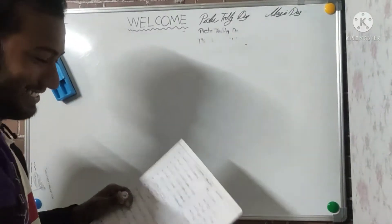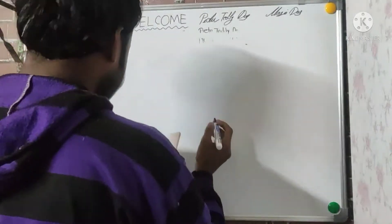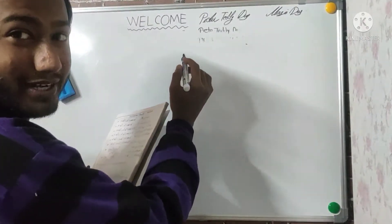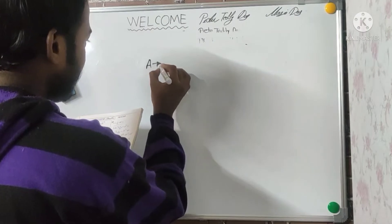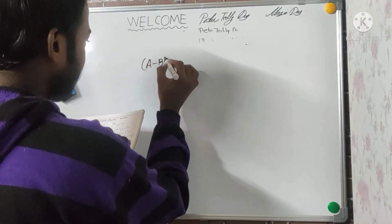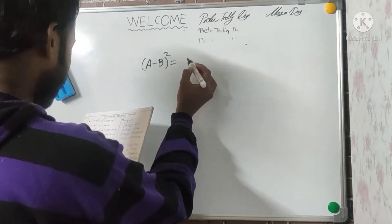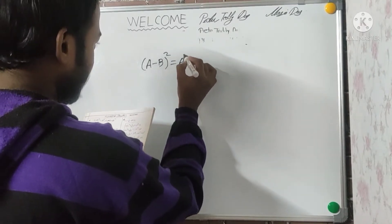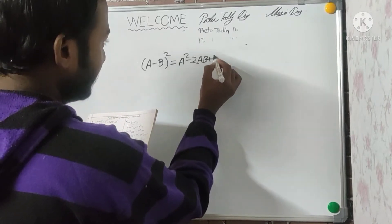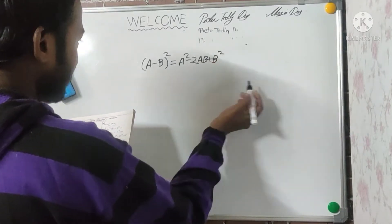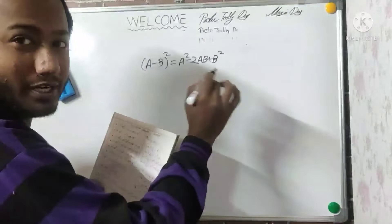What is that? I'm going to write (a - b)². Look at this: (a - b)² equals a² minus 2ab plus b². This formula is important.